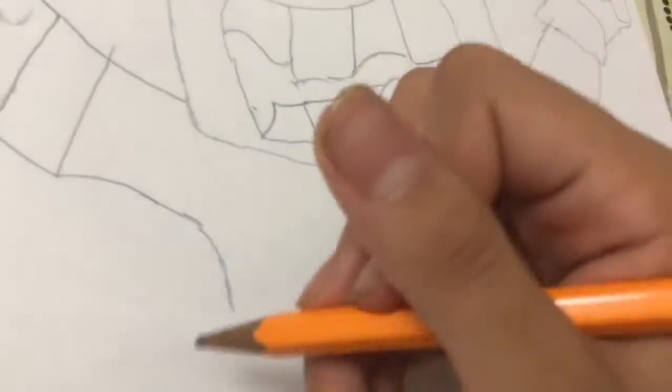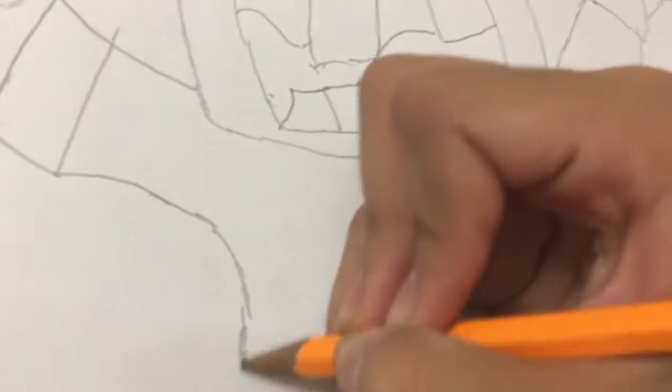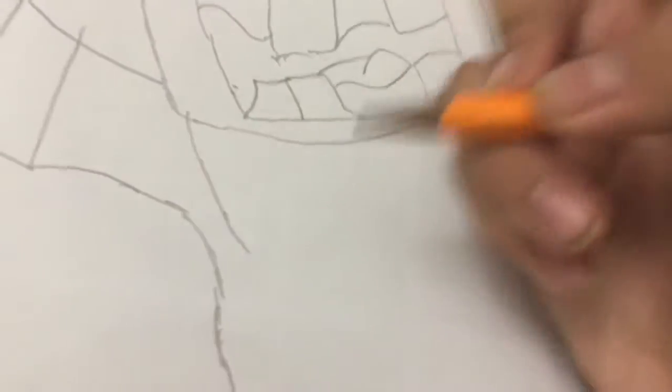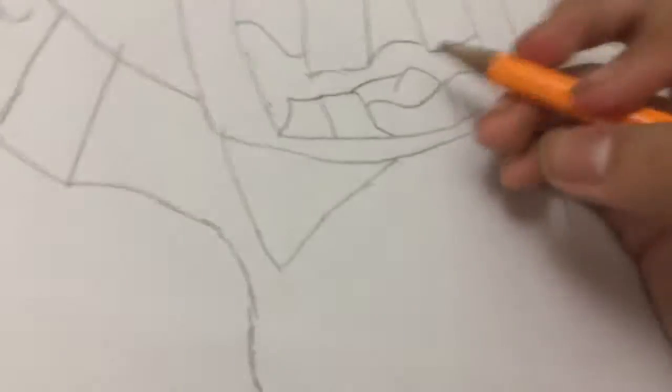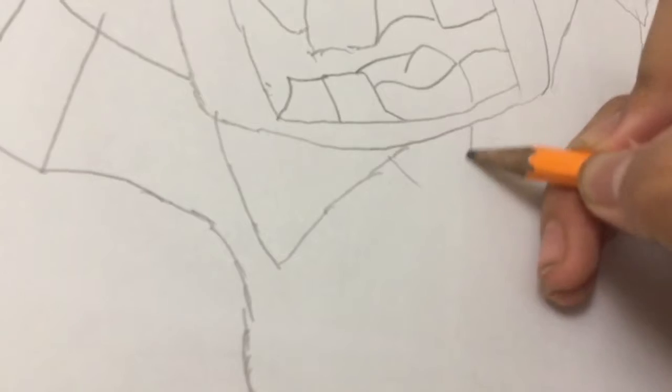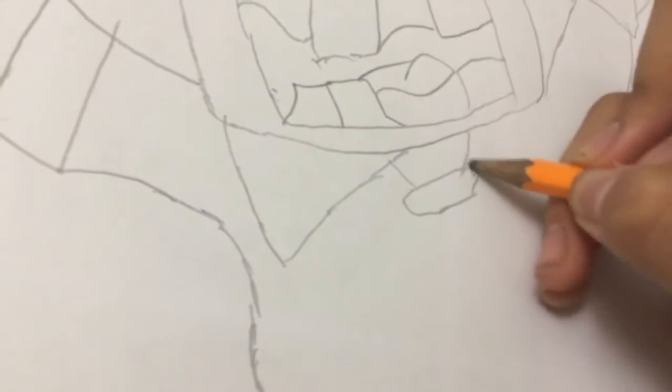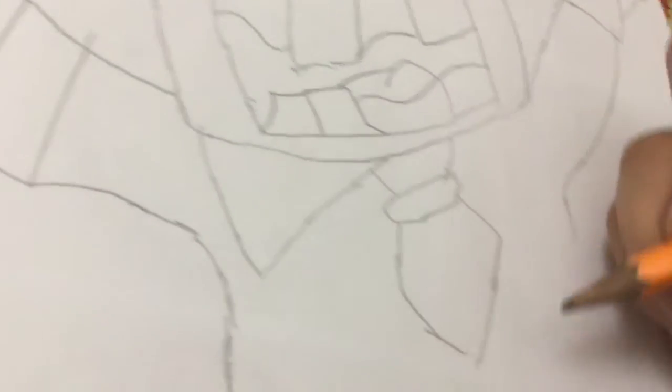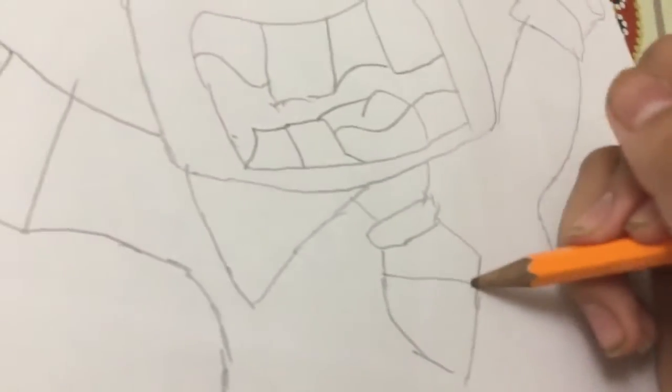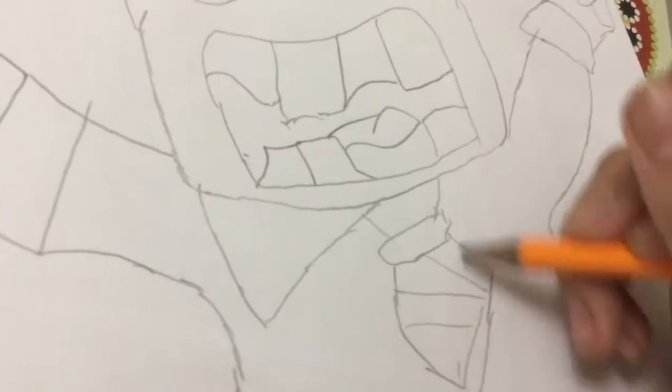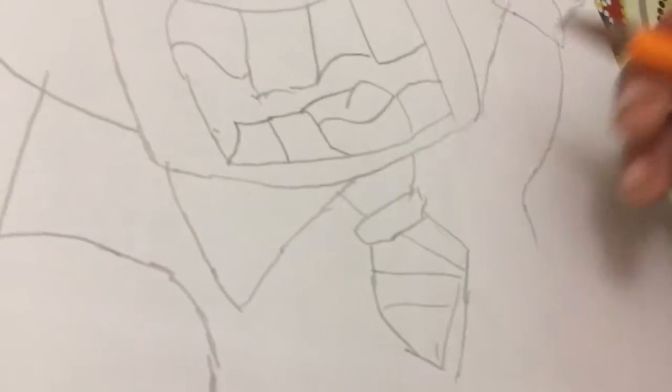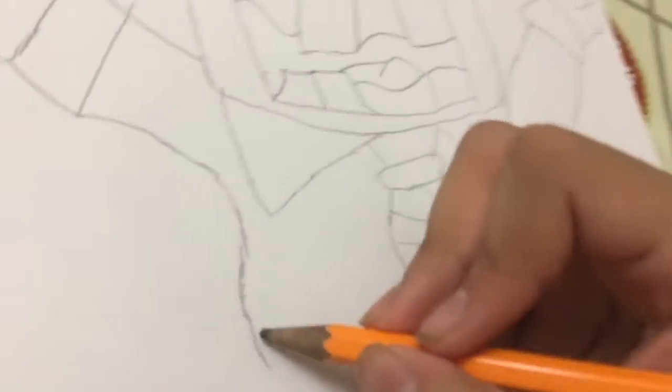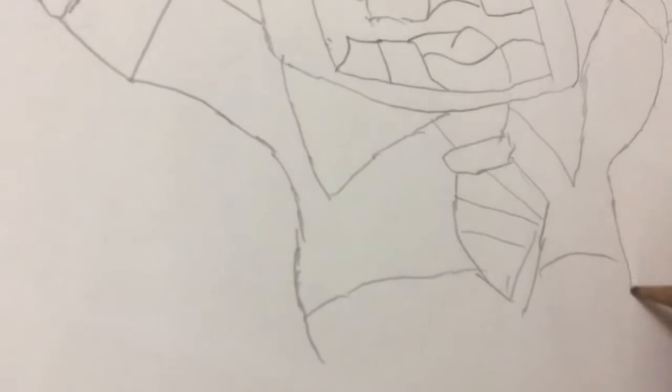Now let's make his collar like this, and then a line from here. His tie. Just draw like lines. And then the collar from here, and then his belt right here. Just draw lines on the belt.